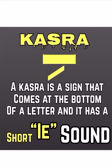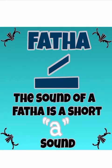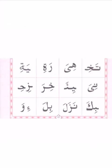Now let us recap. What is a kasra? A kasra is a sign that comes at the bottom of a letter, and it has a short i sound. That means we do not drag it and read it as ee. Then what is a fathah? A fathah is a sign that comes on top of a letter, and the sound of a fathah is a short a sound.